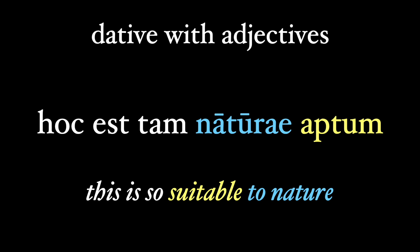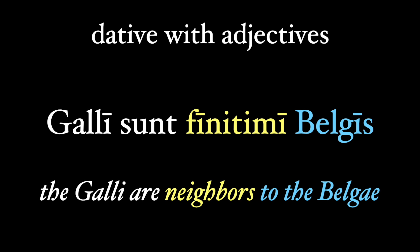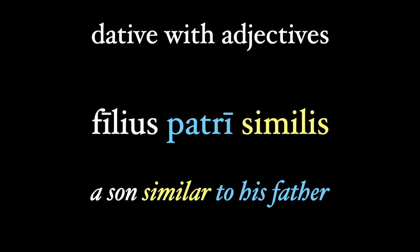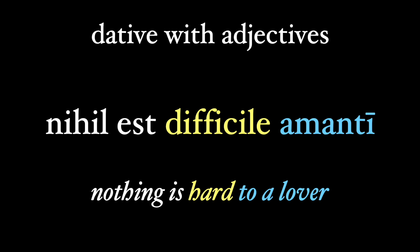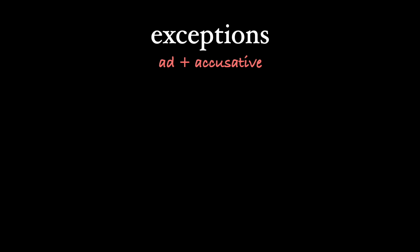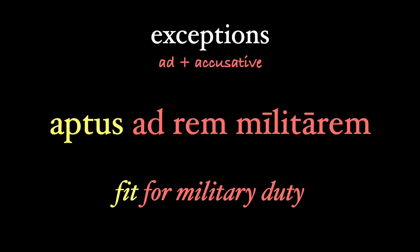Hoc est tam naturae aptum — this is so suitable to nature. We could say that the Gauls are neighbors to the Belgae: Galli sunt finitimi Belgis. A son might be similar to his father: filius patri similis. And just to remind you that the list from the beginning is not exclusive, we have this: nihil est difficile amanti — nothing is hard to a lover. And this isn't to say that the dative is always found after these adjectives. Sometimes we can use ad plus the accusative. A man might be described as aptus ad rem militarem — fit for military duty — relayed with the prepositional phrase instead of the dative.